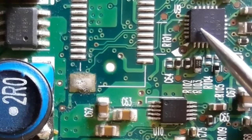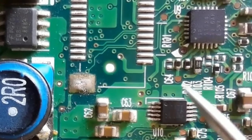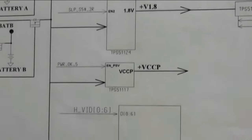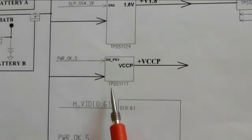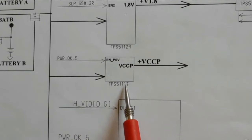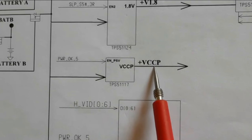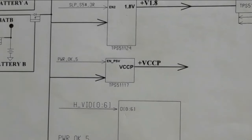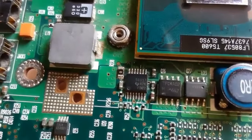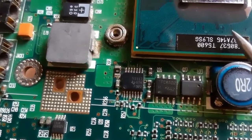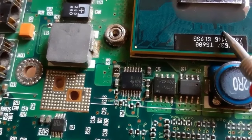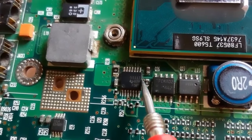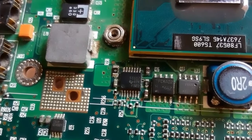These two ICs — TPS51124 and TPS51100 — you will always find them near each other. Now let's see the plus VCCP power management IC, the TPS51117, which supplies VCCP to the processor and other chips. This IC is located near the processor. Here we have the processor and here the TPS51170 IC, which generates plus VCCP for the processor.